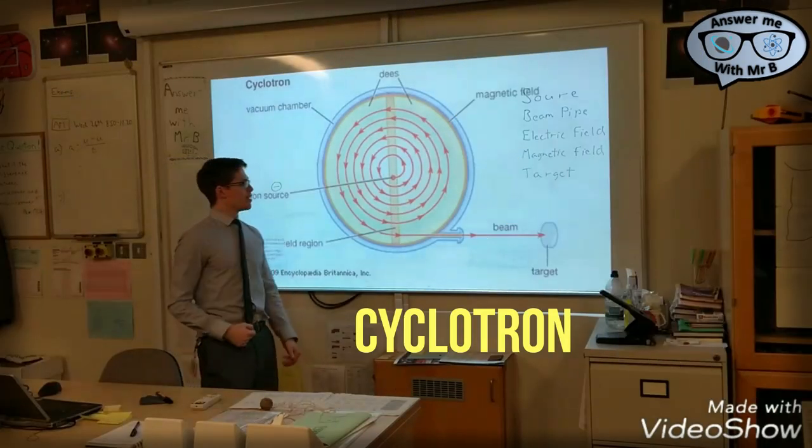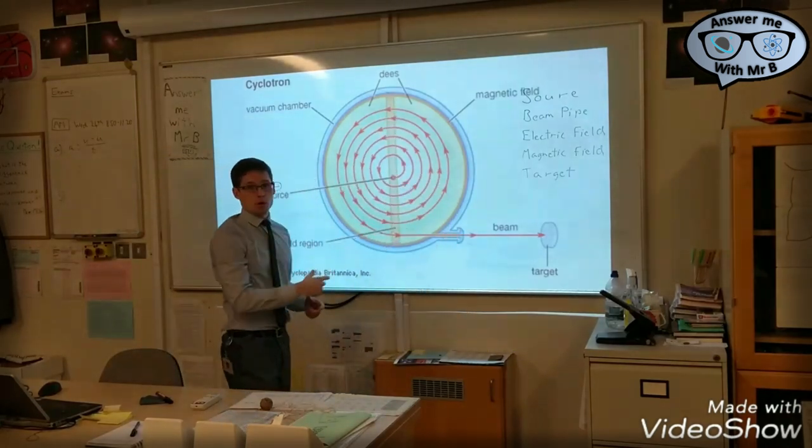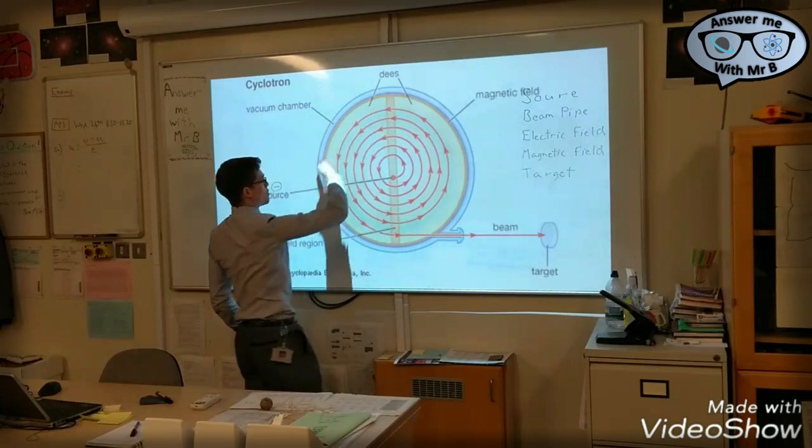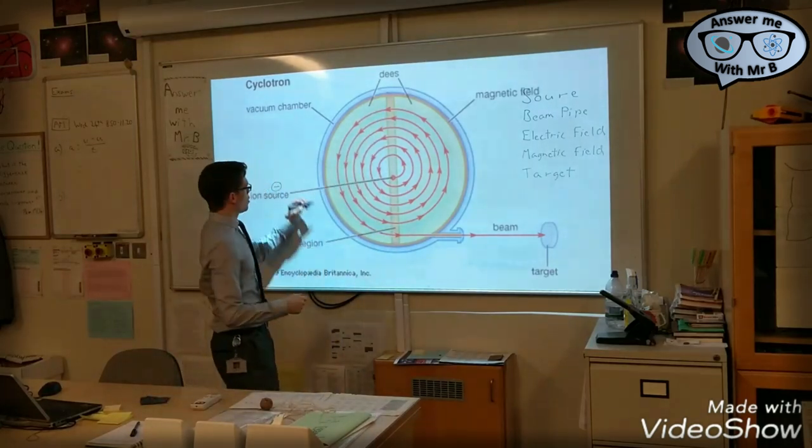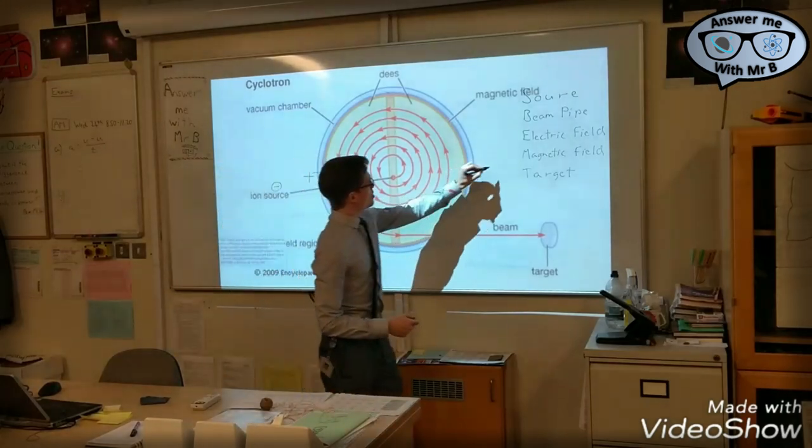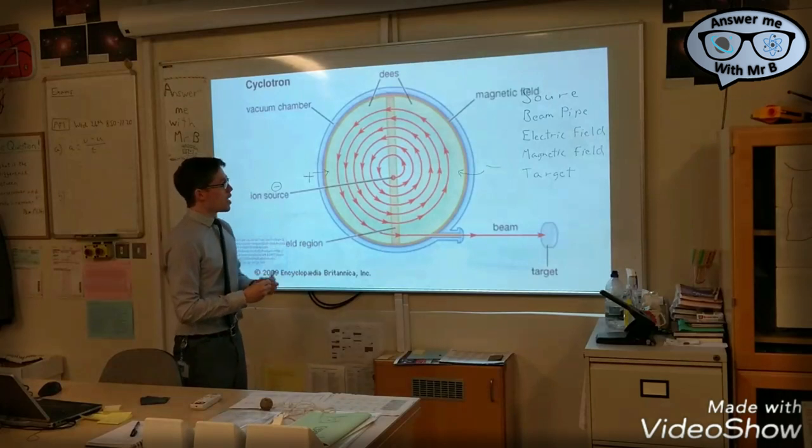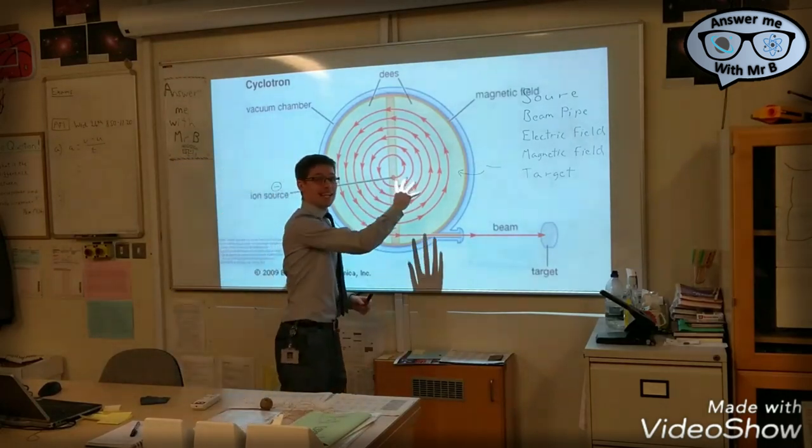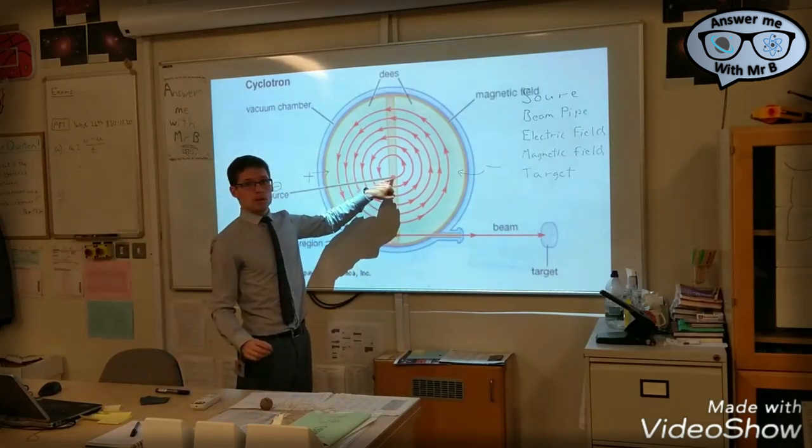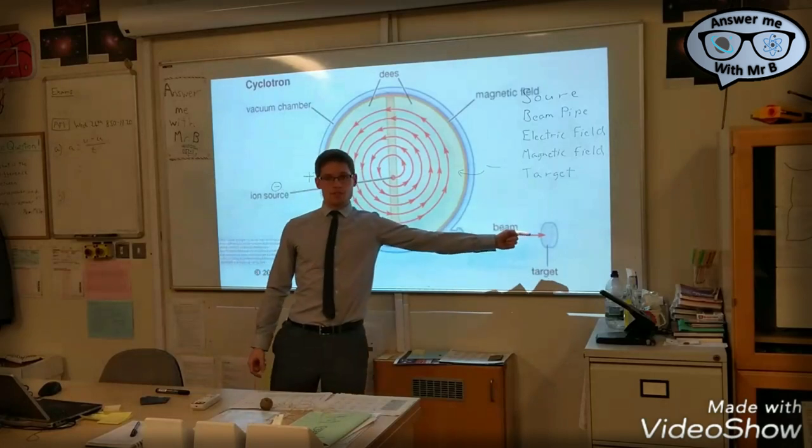Introducing the cyclotron. Now the components of the cyclotron are, you have two Ds, called Ds because they look like the letter D. So these are the green sections left and right. And these have an opposite charge from one another. So if this D on this side is positively charged, then this D on that side will be negatively charged. So they always have the opposite charge. And across the Ds, there is a magnetic field, in this case going into the screen. And what that means is that a charged particle here will spiral throughout the Ds until eventually it slams into a target over there.